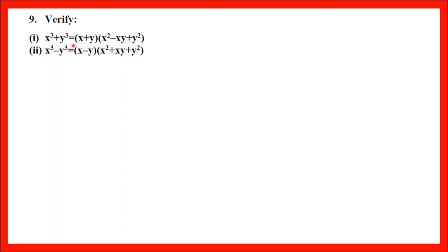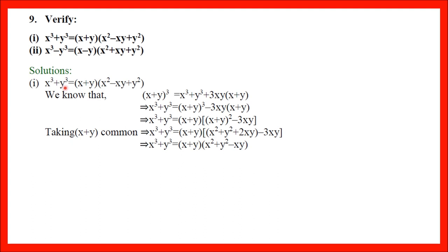Question number 9: Verify — Part 1: x³ + y³ = (x + y)(x² − xy + y²). Part 2: x³ − y³ = (x − y)(x² + xy + y²). We need to verify these one by one. For Part 1, we will use the identity (x + y)³ = x³ + y³ + 3xy(x + y).